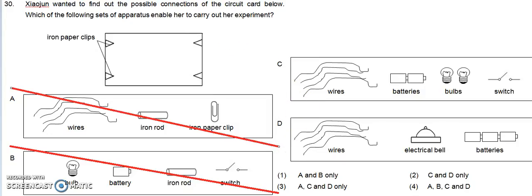So the answer is option 2, C and D, because this would help us to connect to the iron paper clips and see whether there is a connection or not. So answer is 2.